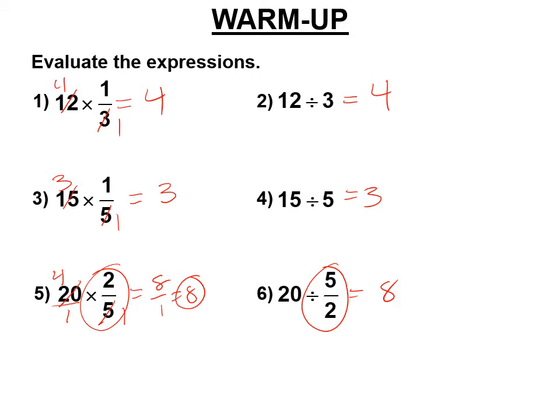Is times 2 fifths, 20 times 2 fifths, the same as 20 divided by 5 halves? Turns out, yes. What's going on, right? What is 1 fifth flipped over? It's 5. What is 1 third flipped over? It's 3. It turns out that division and multiplying by the reciprocal of a number, the number flipped over, have the same answer always, in all cases.